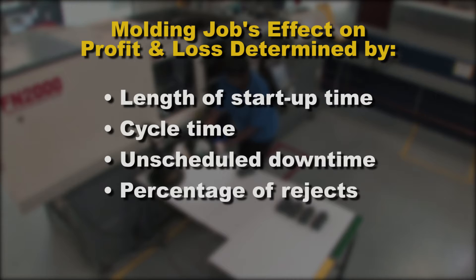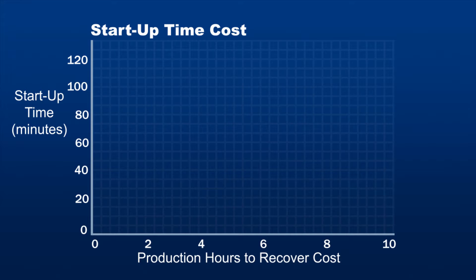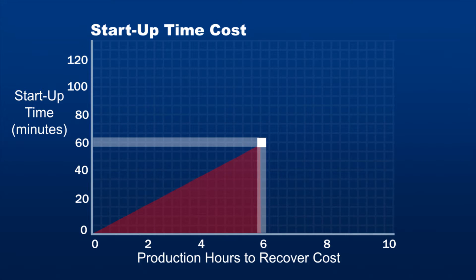Each of these four variables is estimated either directly or indirectly for every molding job. Let's begin with the cost of machine startup time. If the startup time is longer than it should be, it becomes an additional expense, reducing profit. For every extra one hour of startup time, it takes about six hours of producing good parts to pay for that one hour lost.